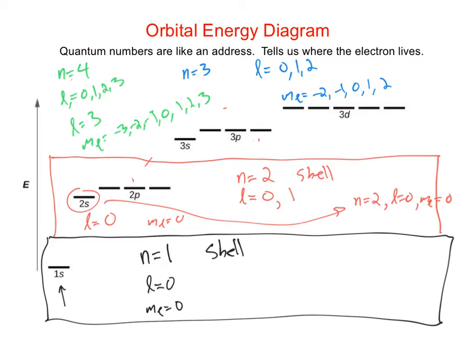The S, P, D, and F orbitals are the orbitals occupied in any ground state electron configuration. We can go on to G and H in higher orbitals, but those would only be occupied in cases where an atom has absorbed a photon and become excited, with an electron briefly promoted up into one of those higher energy orbitals.